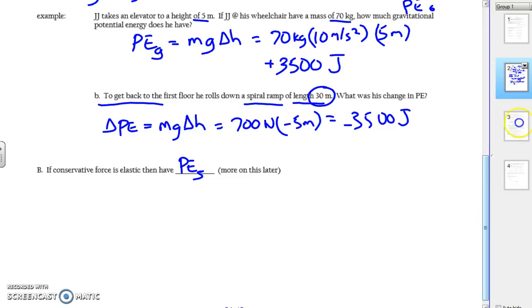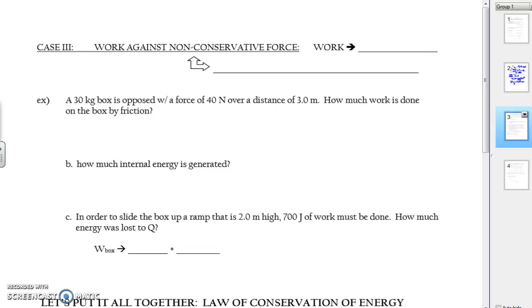The last type of situation we want to understand is when we do work against non-conservative forces. Non-conservative force, it's not the best definition but it works for us, it does not bring the object back. And a classic example of a force that would oppose you, but if you let go it doesn't bring you back, is friction or drag. So what kind of energy do you get when you have friction or drag opposing you? We mentioned this before, we get thermal energy. So the work that you do goes into thermal energy, and we're going to give the symbol for thermal energy by U.